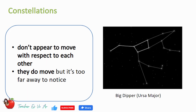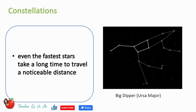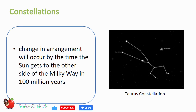The positions of constellations in the night sky are also good indicators of seasons, especially for planting and harvesting. The arrangement of stars in a group does not change because stars don't appear to move with respect to each other. Actually, they do move, but it's too far away to notice. Even the fastest stars take a long time to travel a noticeable distance. Change in arrangement will occur by the time the sun gets to the other side of the Milky Way in 100 million years.